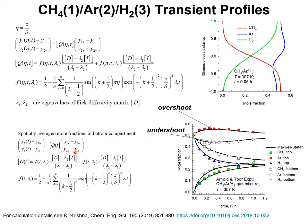From this expression, the integral average mole fractions in the top and bottom compartments may be determined. The profiles calculated from the analytic solution are shown by continuous solid lines, and these are in excellent agreement with the experimental data of Arnold and Tour. In particular, the overshoot and undershoot of the argon concentration are well represented.